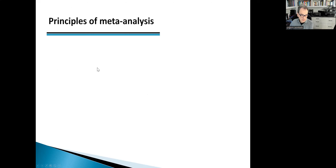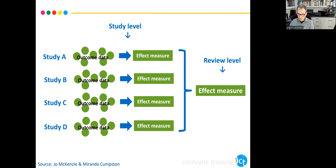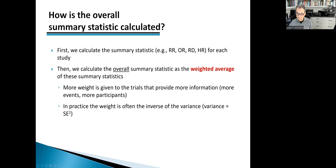In principle, here is how a meta-analysis is done — borrowing a slide from Cochrane training. Meta-analysis takes individual studies. Say we have four studies; we calculate the effect measure for each study, and then the meta-analysis calculates the effect measure at the review level. First, the summary statistic for each study, then the overall summary statistic.